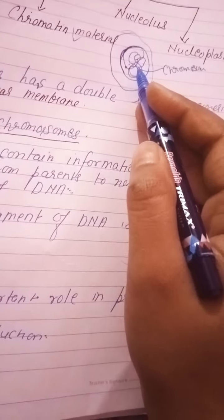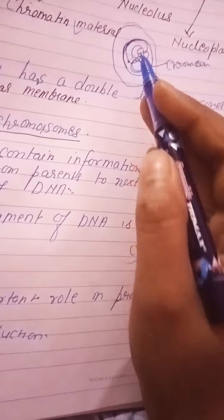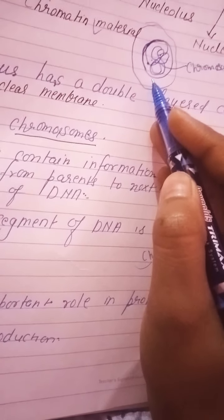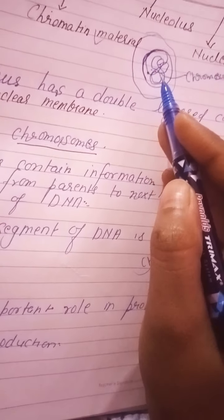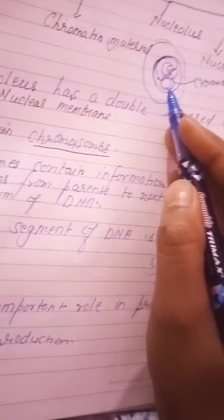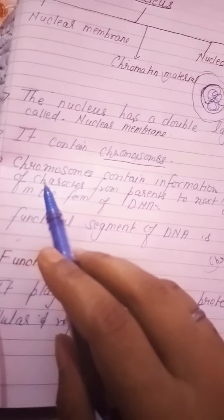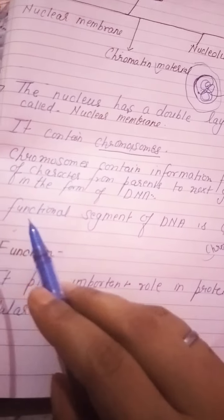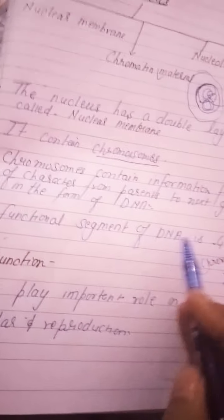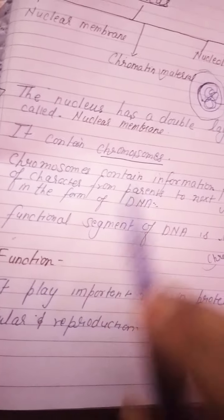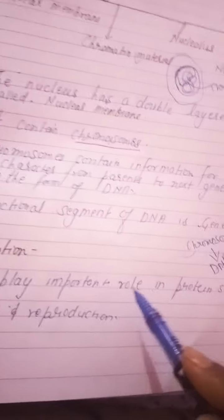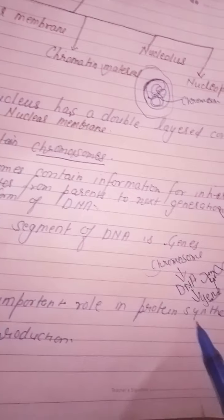The chromosomes are located in the nucleus. This is why the nucleus is a very important part of the cell, because all the characters and cell division depend on the nucleus. The functional segment of DNA is the gene. The main function of chromosomes is that they play an important role in protein synthesis.